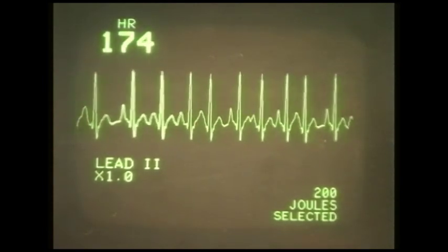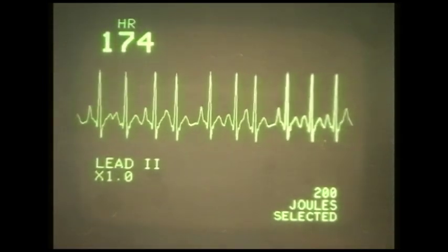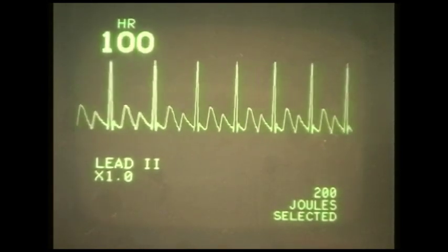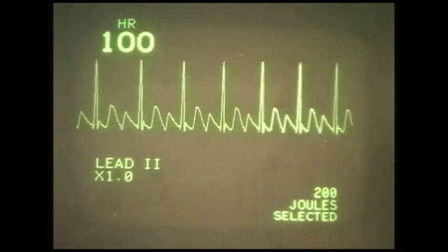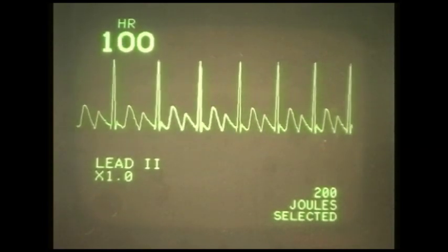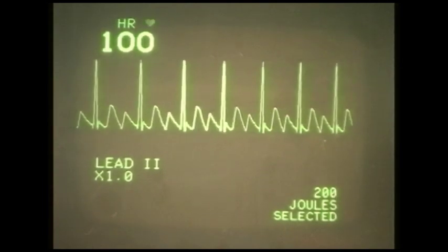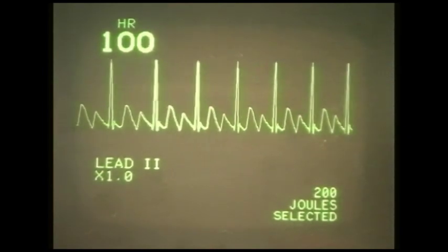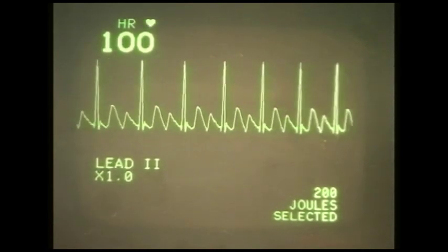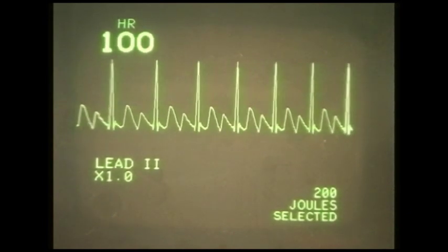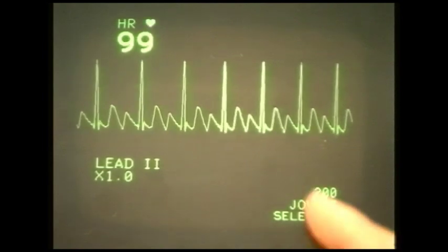The second rhythm that we'll look at is atrial flutter. It may well share the same mechanism as atrial tachycardia, or it may result from depolarisation circling the right atrium. So it just keeps going back round. Within the atria itself? Within the atria itself. It differs in that the atrial rate is much higher. And as we can see here,